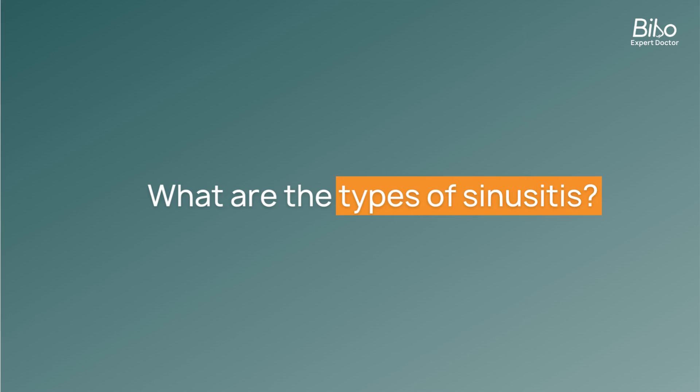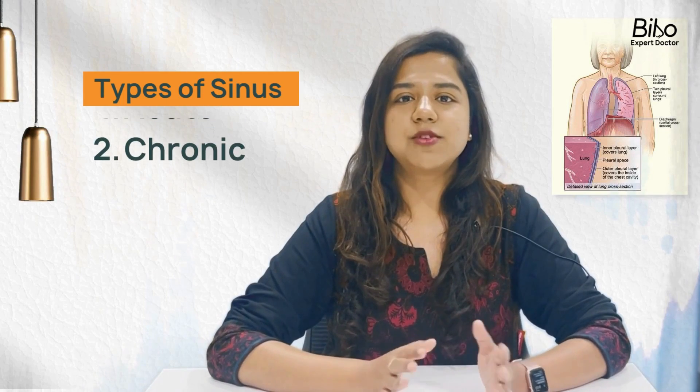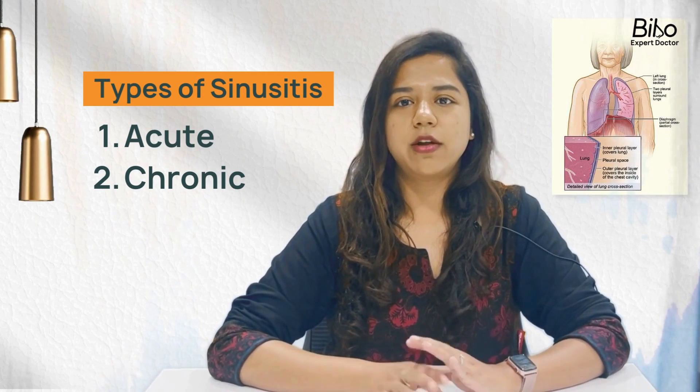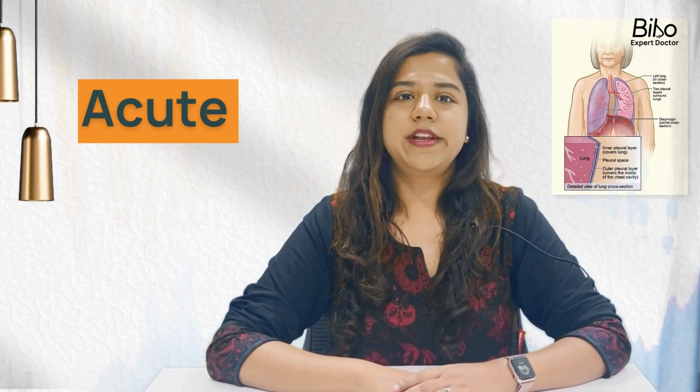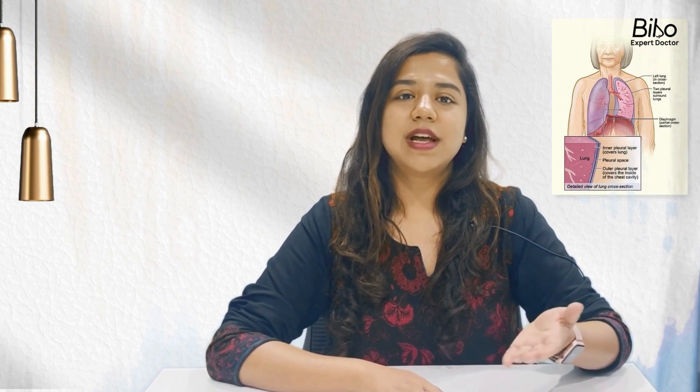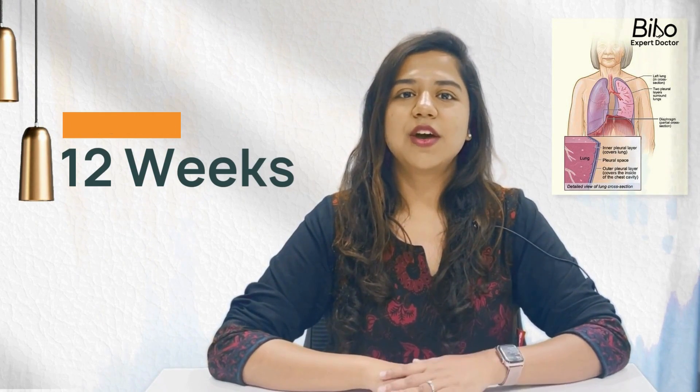We will be talking in detail about acute and chronic sinusitis. There can also be other symptoms like loss of smell, throat irritation, and cough which worsens at night. There are two types of sinusitis: acute and chronic. Acute is when the symptoms last less than 12 weeks, and chronic is when the symptoms are there beyond 12 weeks.